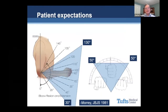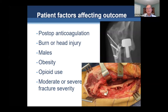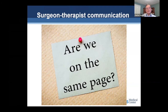Number seven: patient expectations. Patients want a normal elbow, which may not necessarily be realistic. We know that functional range of motion is about 30 to 130 degrees and 50 degrees each of pronation and supination. Don't limit their goals, but they have to have a reality check once in a while. Patient factors affecting outcome include post-op anticoagulation causing hematoma, burn or head injury, male sex, obesity, opioid use — which can impact participation in rehab — and the worse the fracture, obviously potentially the worse the outcome. Surgeon-therapist communication is essential.